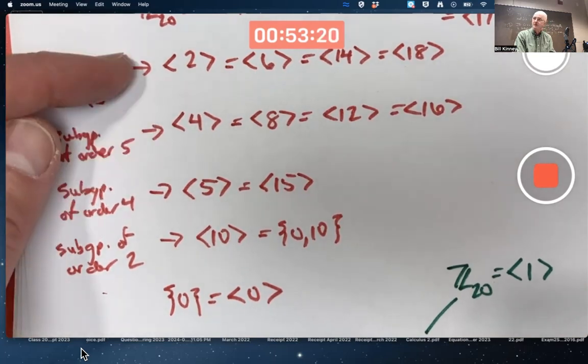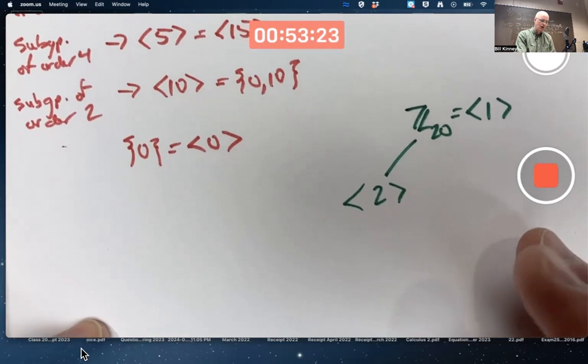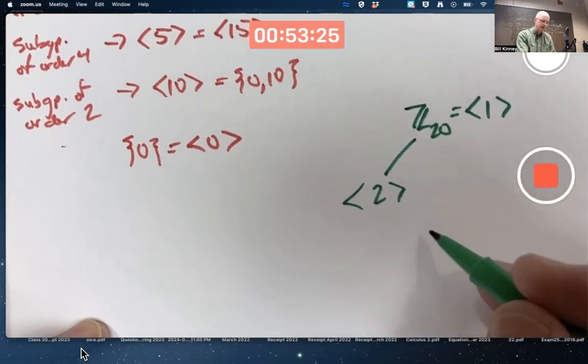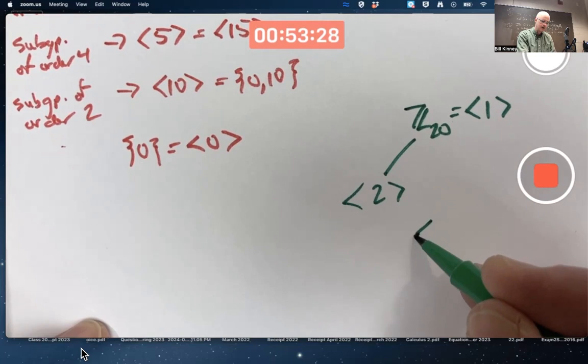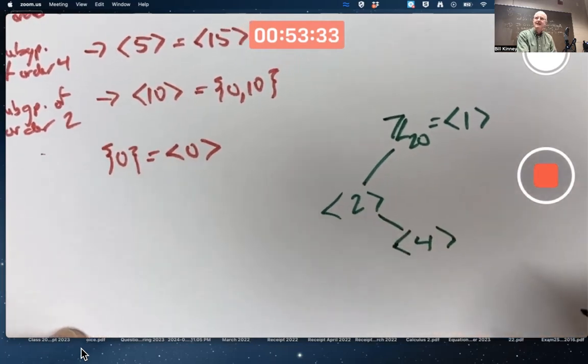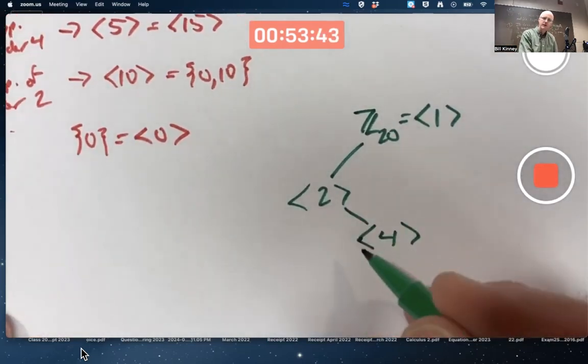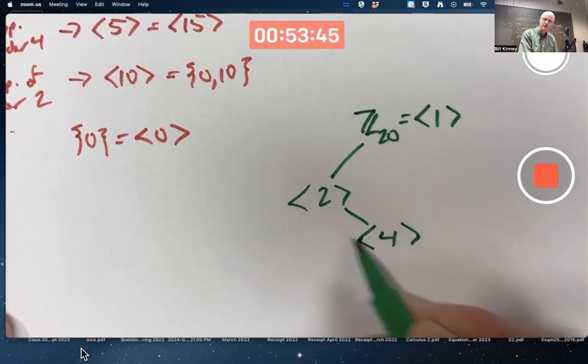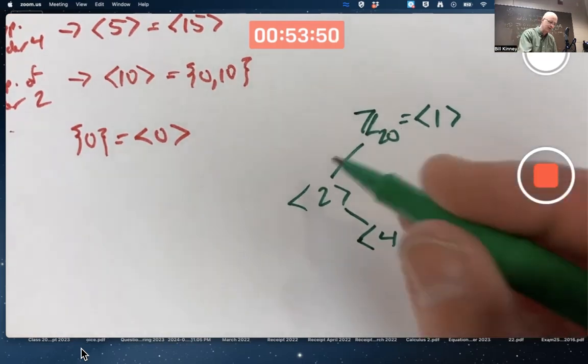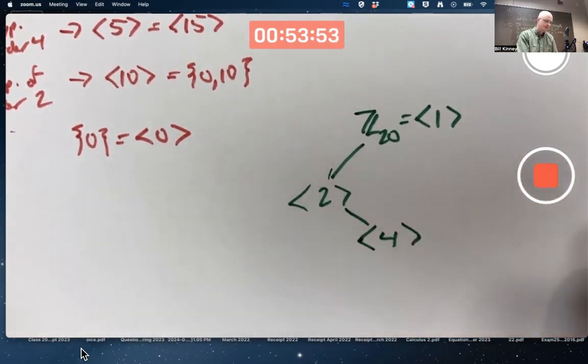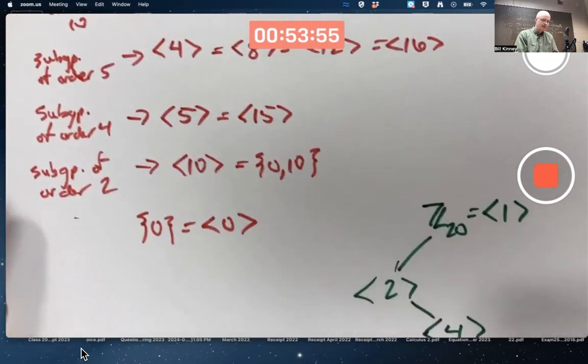Remember I said the subgroup generated by 4 is a subgroup of the subgroup generated by 2. All multiples of 4 are also multiples of 2. So I would now want to put that over here. I'd want to put it, say, below this one, maybe not much below it. The exact way that I structured this diagram in terms of how I put these lines is not relevant. What's important is the subgroup inclusions.